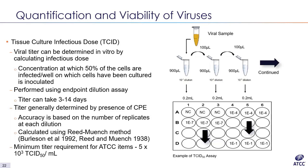These assays allow us to observe any propagation changes between different passages for production or historical seed lots. In some cases, viral products do not produce CPE and are not measurable in this way. For this, we pair IFA and PCR or reverse transcriptase PCR with an endpoint dilution assay.